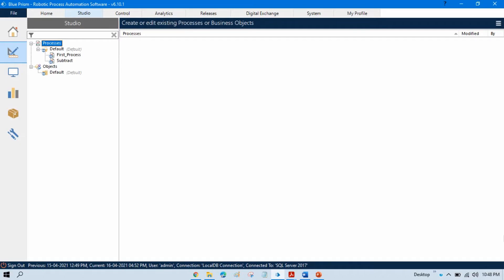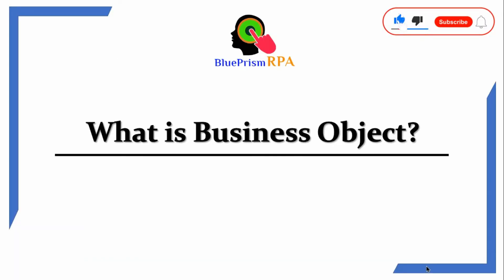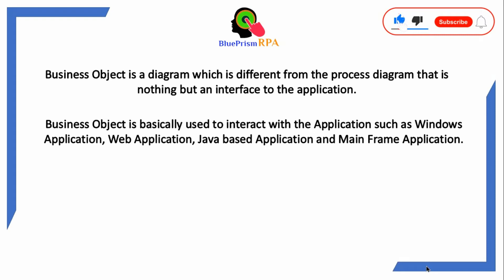In the previous video we talked about how to pass value from one process to another process. Now in this video we will talk about what is a business object. A business object is a diagram which is different from the process diagram — it is basically an interface to the application.